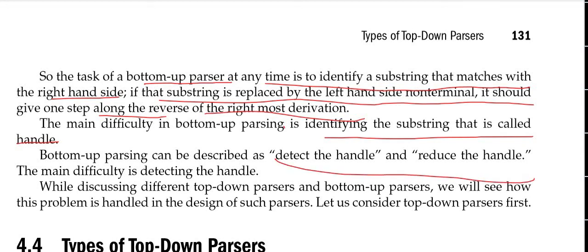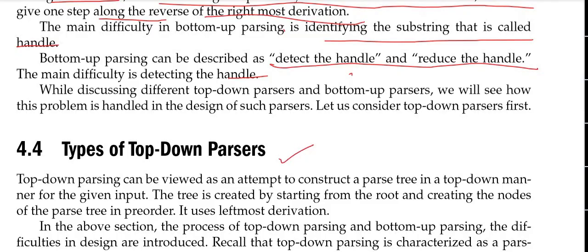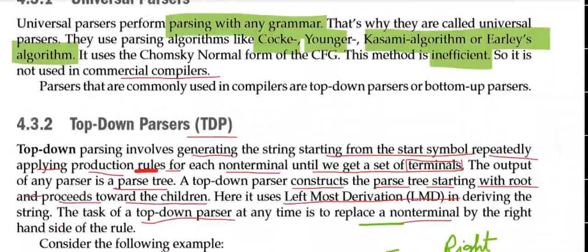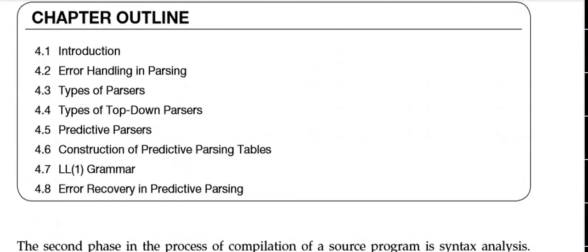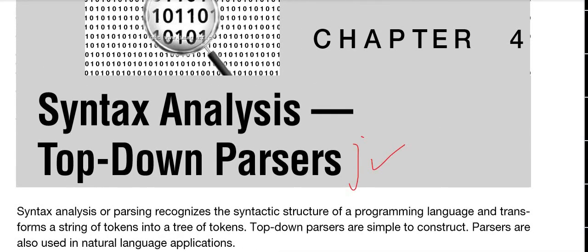Bottom-Up Parsing can be described as: detect the handle and reduce the handle. The main difficulty is handle detection. Since Bottom-Up Parsing is covered in the next chapter, we will not go into further detail here. This chapter focuses entirely on Top-Down Parsers — as indicated by the chapter title — and that will be our main focus going forward.